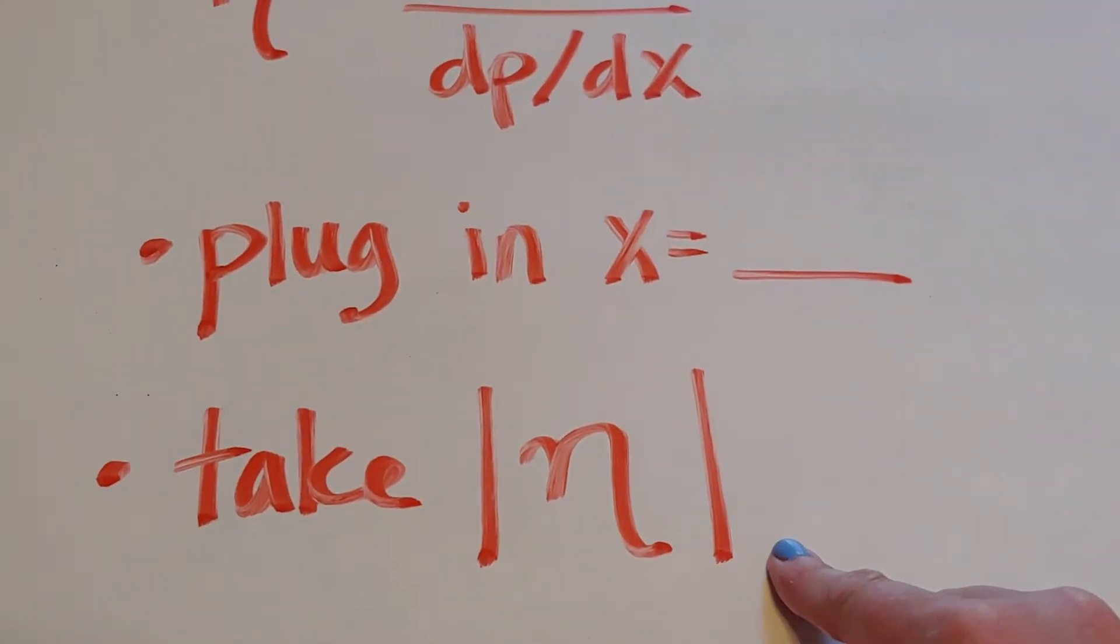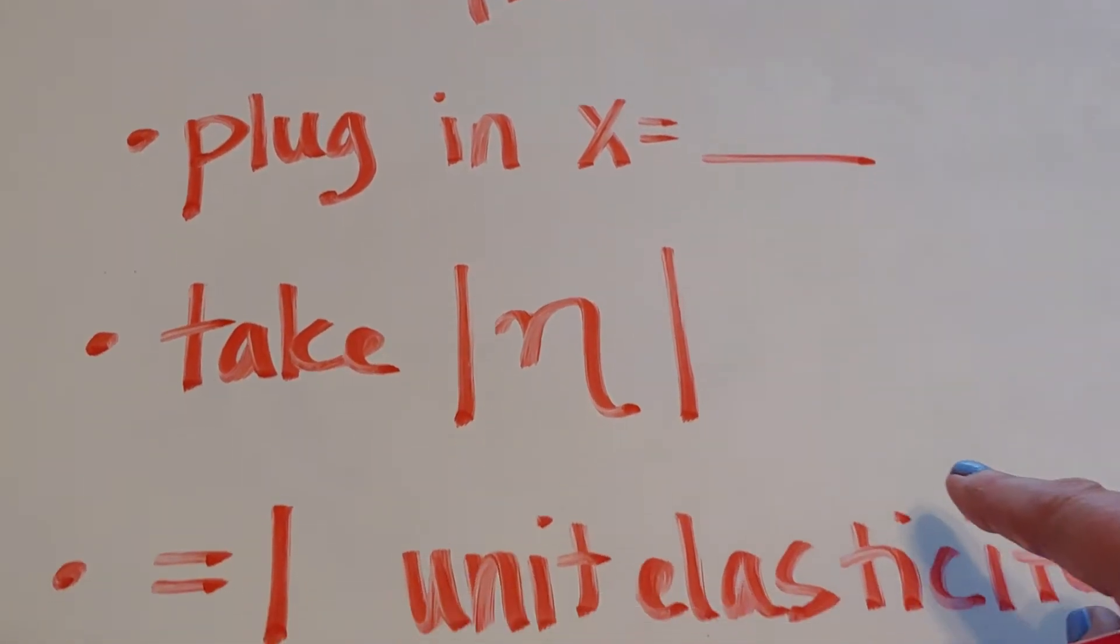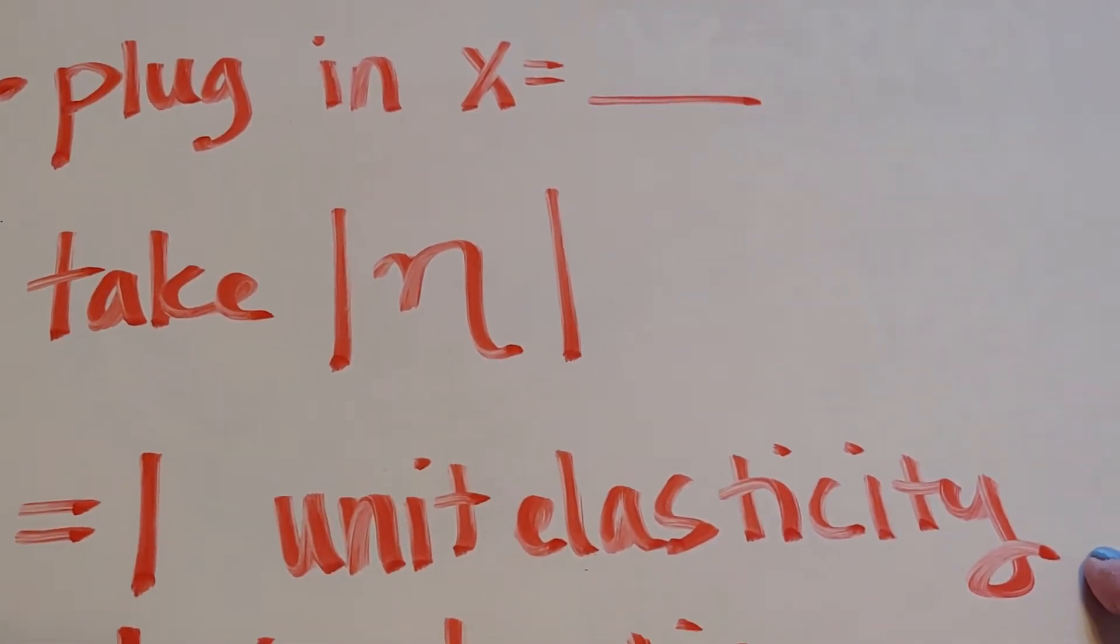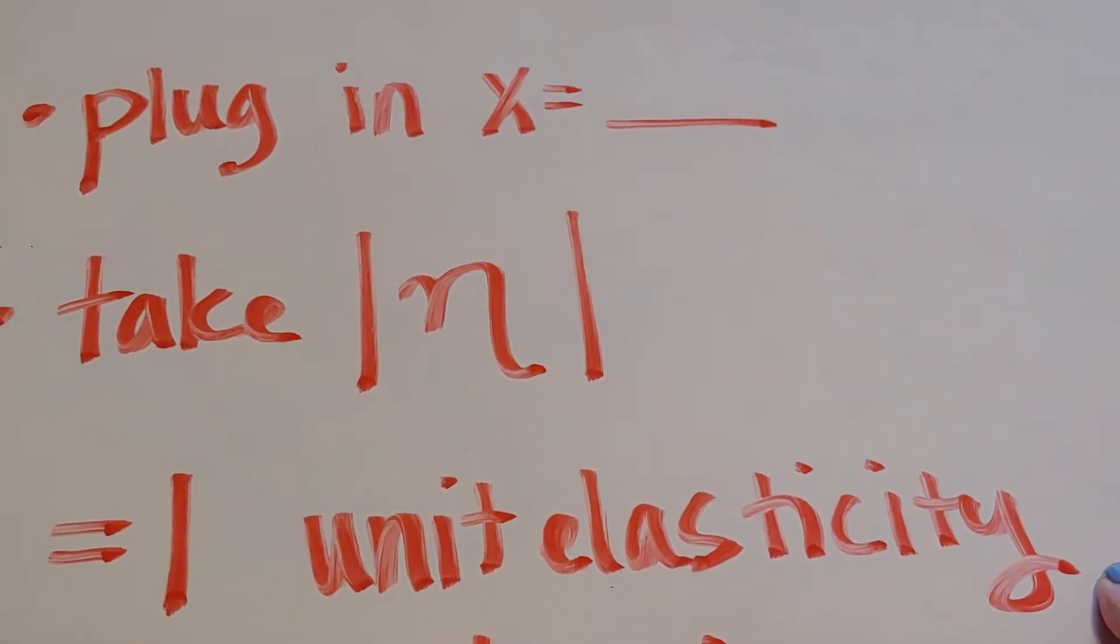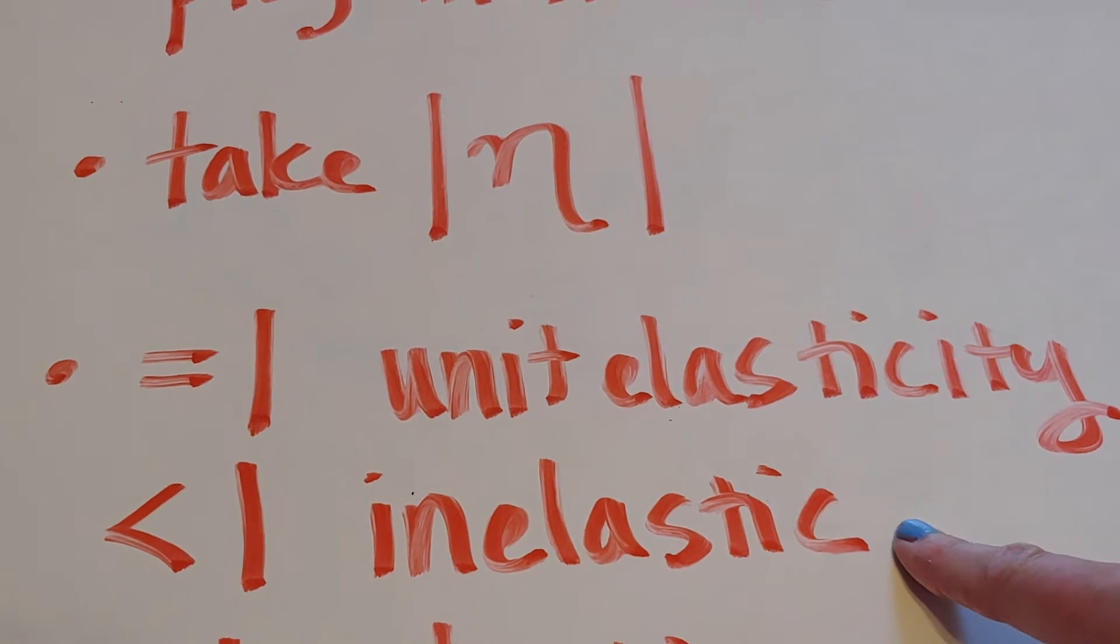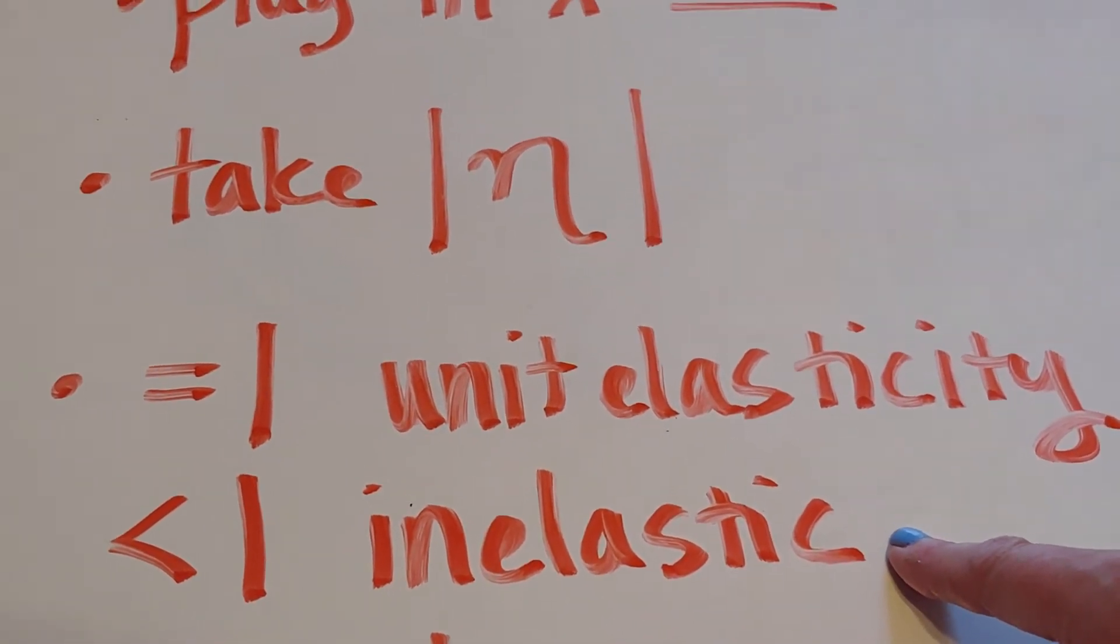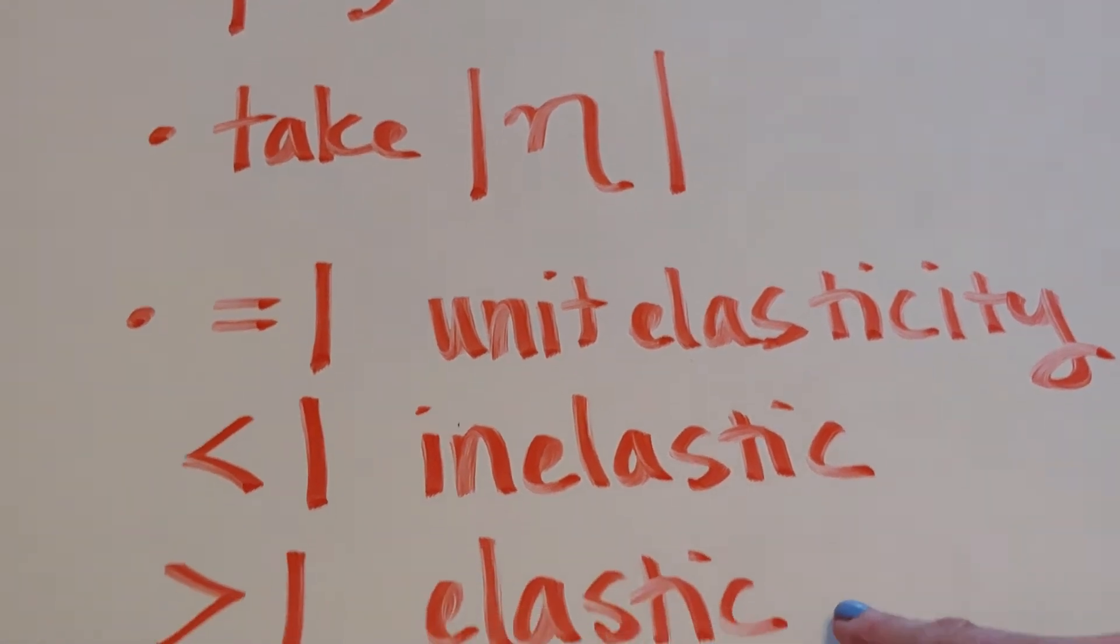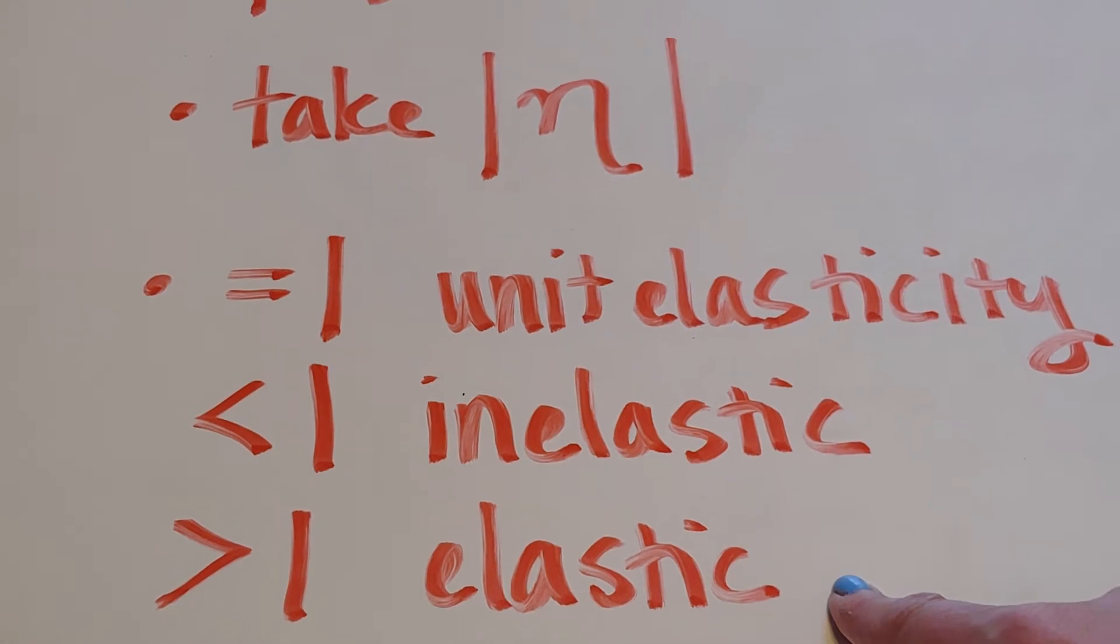So I want to know what number do I see. So that number, we're going to take the absolute value of. If I get the number one, that means that at that x value we have unit elasticity. If I get a decimal that's smaller than one, that means that at that x value it's inelastic. The price is inelastic. And finally, if I get a value that's greater than one, it means that the price is elastic at that spot.